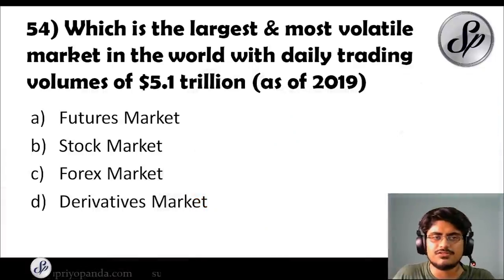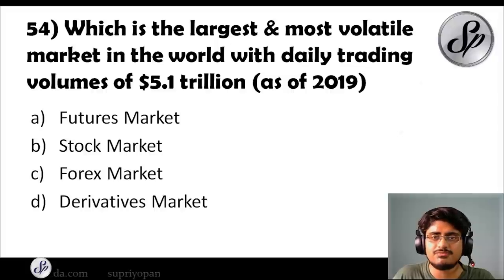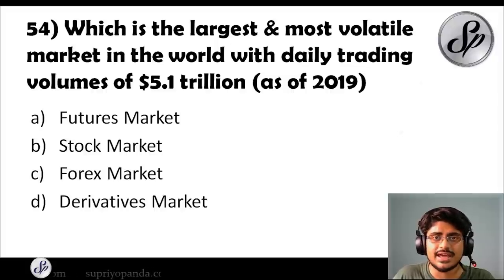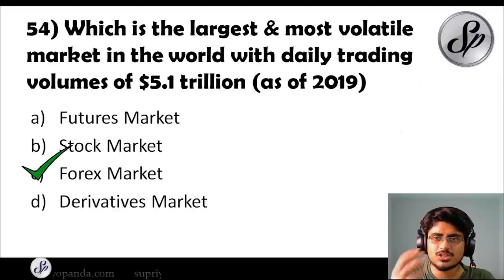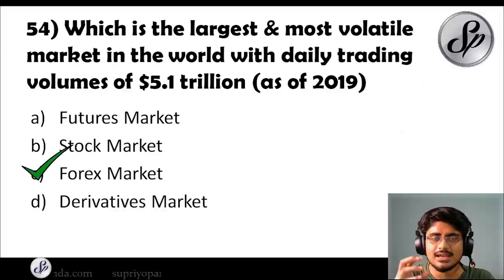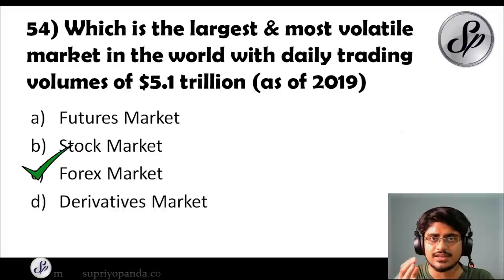Question fifty-four: which is the largest and most volatile market in the world, with daily trading volumes of 5.1 trillion dollars as of 2019? The answer is the forex market. The forex market has the highest volumes per day — 5.1 trillion dollars per day. It is a very, very important number to remember.